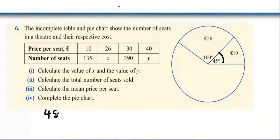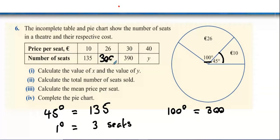Calculate the value of x and value of y. Well, good news is I can calculate how many people 45 degrees equals. 135 seats. Divide both sides by 45, 1 degree would be the equivalent of 3 seats. This links me to the following information then. If 100 degrees would be how many seats then? 300, because you've got to multiply both sides by hundreds. So straight away, I know that there's 300 for this one.